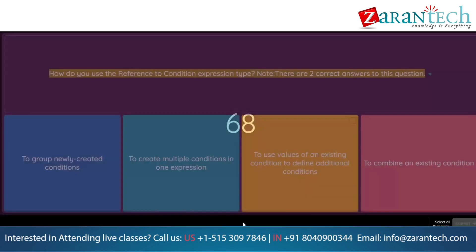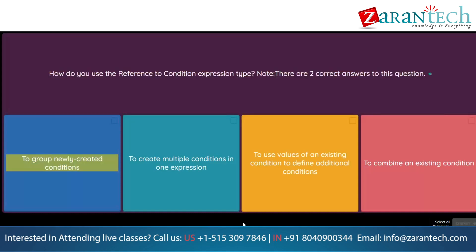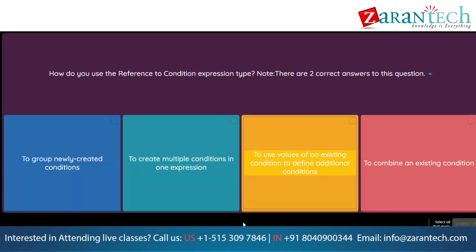Question: How do you use the reference to condition expression type? Note: there are two correct answers. Option 1: To group newly created conditions. Option 2: To create multiple conditions in one expression. Option 3: To use values of an existing condition to define additional conditions. Option 4: To combine an existing condition.